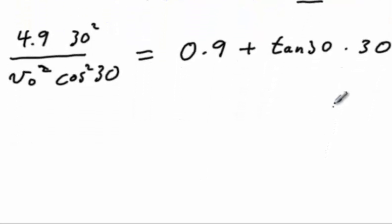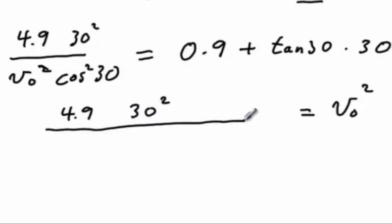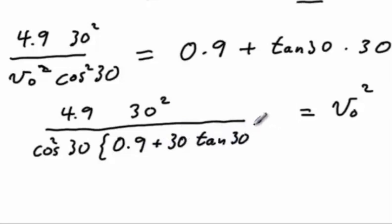To solve for v zero, I will bring the v zero squared to the right and everything else to the left, yielding a somewhat complicated expression but nonetheless solvable. V zero squared has a 4.9 in the numerator. It's got a 30 squared. It's still got a cosine squared of 30 in the denominator, but it's now also got this entire expression: 0.9 plus 30 times the tangent of 30. And this yields the expression that v zero is equal to 17.96, which we'll call 18 meters per second.